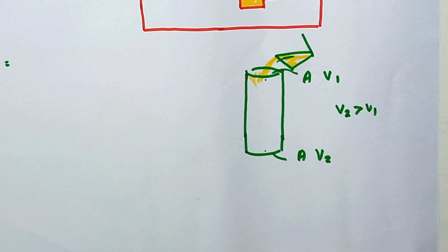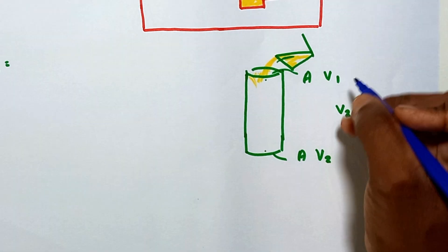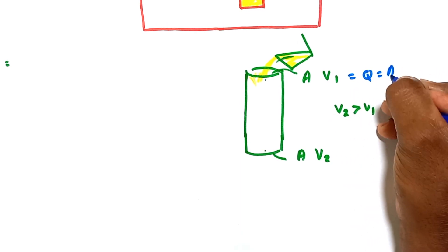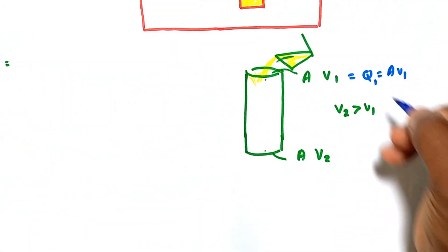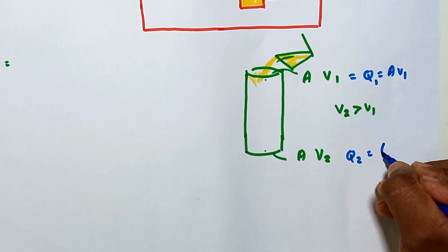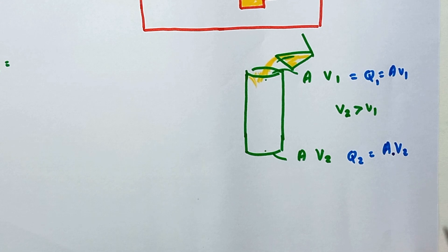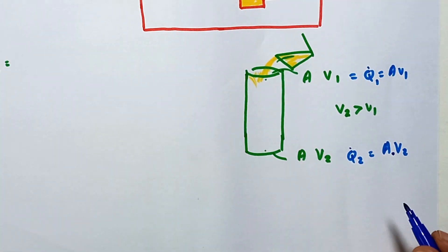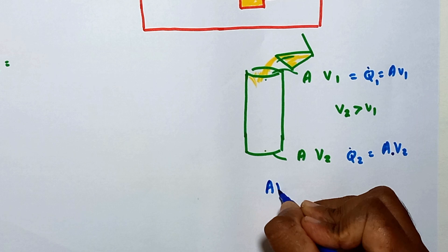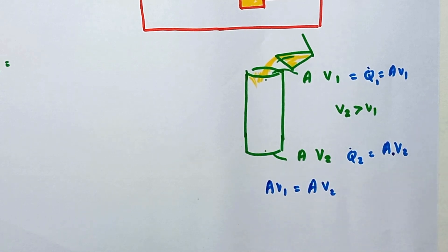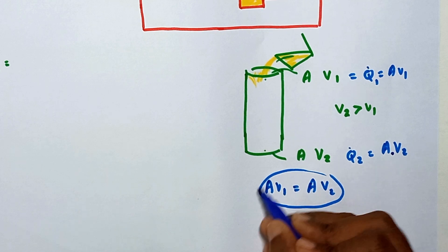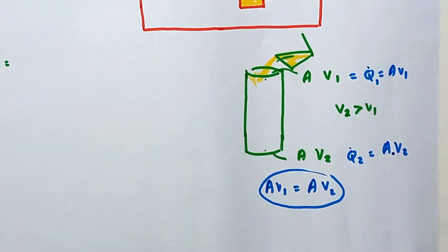Because of acceleration of the molten metal due to gravity, the flow rate at the top is Q1 = A·v1, and at the bottom Q2 = A·v2. The flow rates must be equal, so A·v1 must equal A·v2. But this equation cannot hold because v2 is greater than v1, so this equation is not valid.